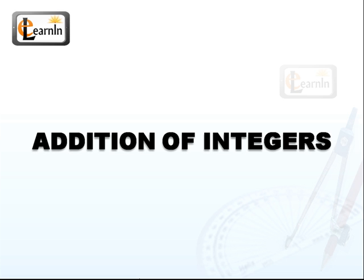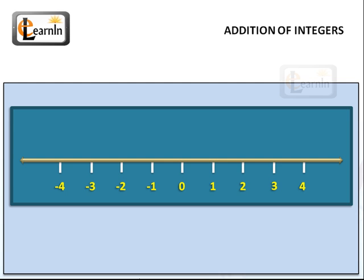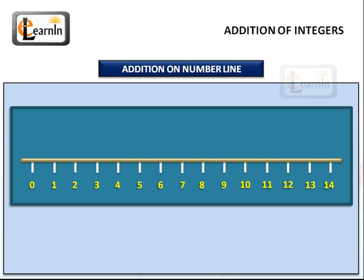Addition of Integers. In this video, we're going to learn how to add two integers using a number line. A number line is just a graphical method of adding — it's like the x-axis of a Cartesian coordinate system with no y-axis. Let's try to learn this method with an example.